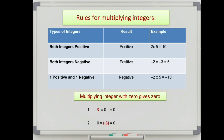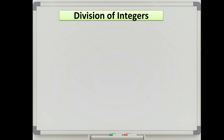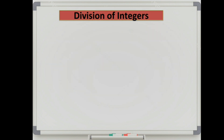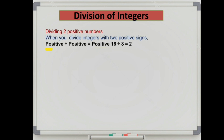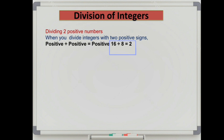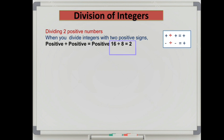Now let us learn division of integers. It includes both positive and negative numbers. Just like multiplication, division of integers follows the same rules. When you divide integers with two positive signs, you get a positive integer. For example, 16 divided by 8: both 16 and 8 are positive, so the answer is a positive integer.